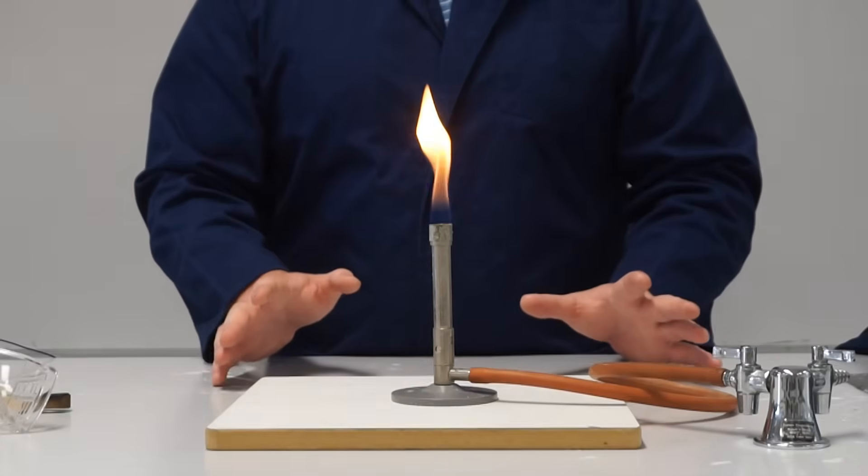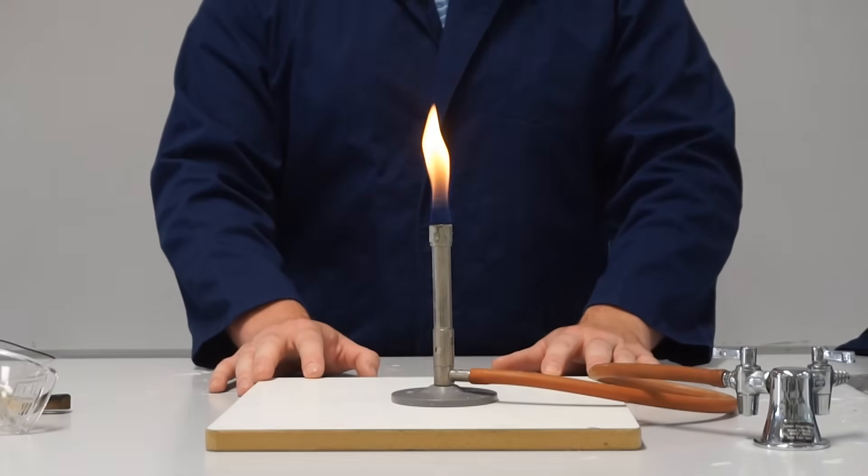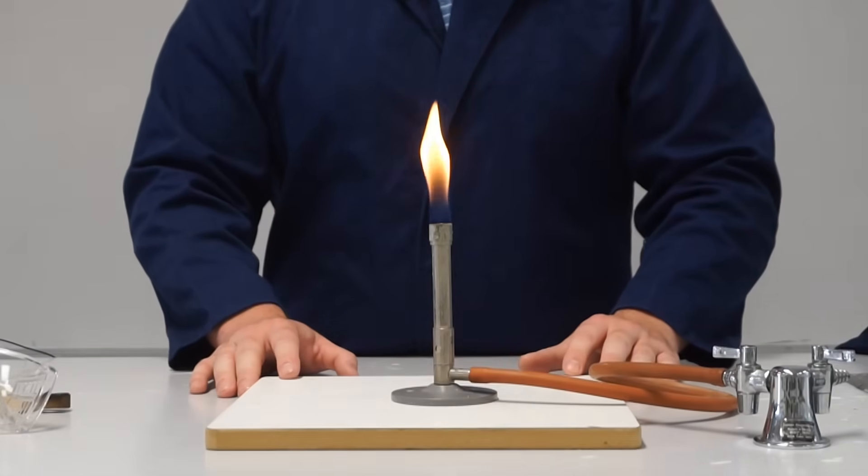Hi everyone, welcome back to High School Science 101 and today I'm going to show you how to use one of the most important pieces of equipment that we use in our science lab, the Bunsen burner. Let's get started.